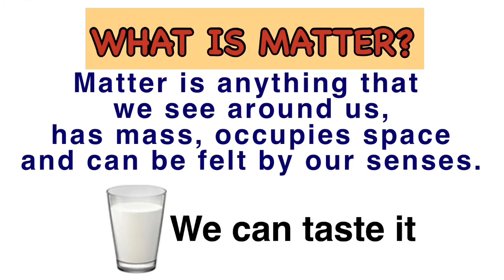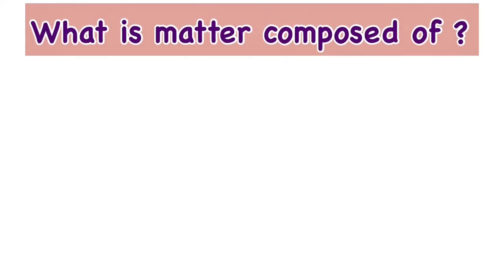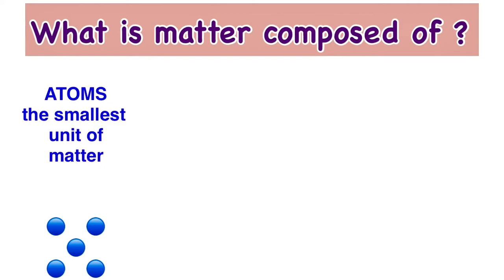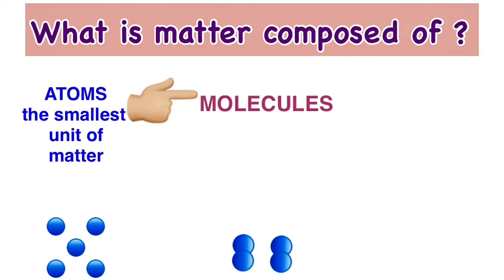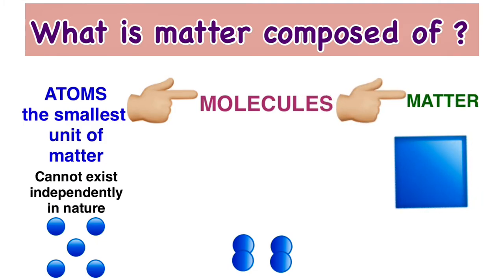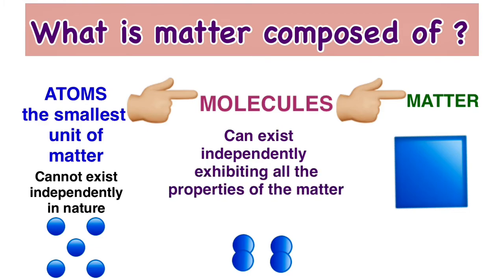What is matter composed of? Atoms is the smallest unit with which matter is made up of. Atoms join together to form molecules. Molecules in turn join together to form a complete matter. Atoms cannot exist in nature independently on their own. Molecules, on the other hand, can exist independently in nature while exhibiting all the properties of matter.